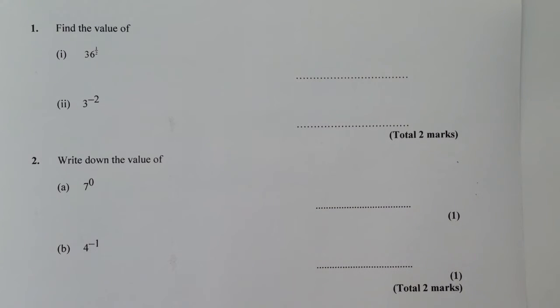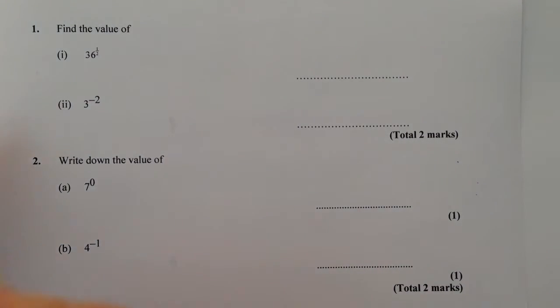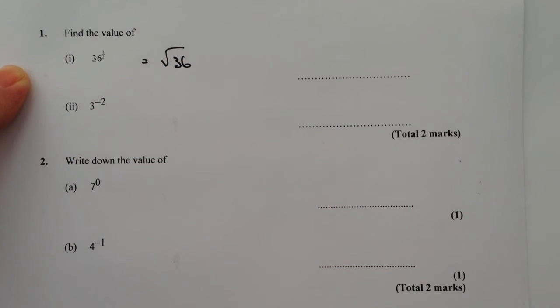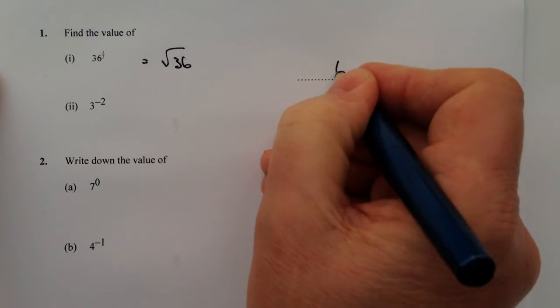The first thing is 36 to a half. Well that's exactly the same as saying the square root of 36, and that's actually 6.